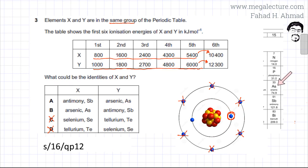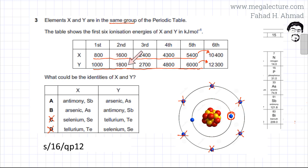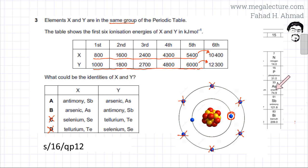We are left with either antimony or arsenic as candidates. Arsenic is a smaller atom, so its ionization energies would be greater. As you move down the group, ionization energies decrease because atomic size increases and the shielding effect increases. Therefore, the element with higher ionization energies must be arsenic — so element Y is arsenic.